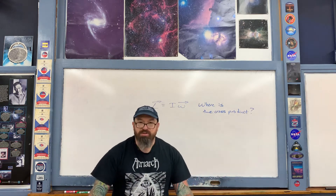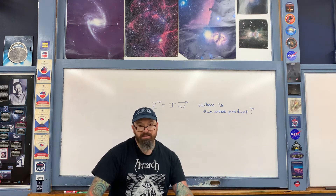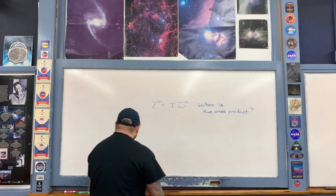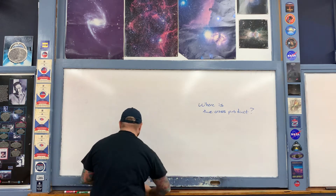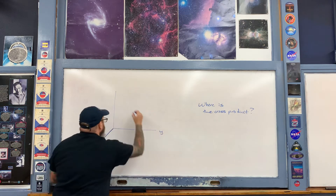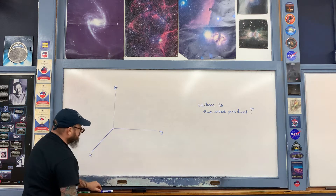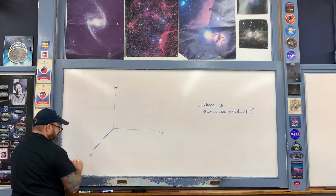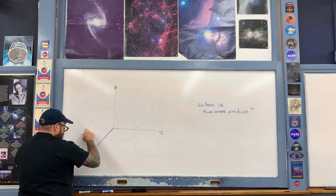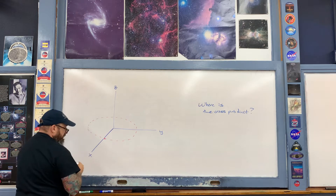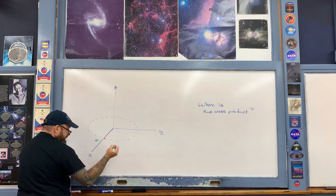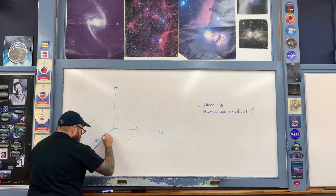The easiest way to answer this question is to examine the simplest possible case. Let's say that we have a point particle that is rotating about a fixed axis of rotation. Let me draw this out in three dimensions — here's the xy plane, here's the z direction. The point particle is circulating in the xy plane, and right here is the moment arm from the axis of rotation to this point. The particle has mass m, and the moment arm is r.